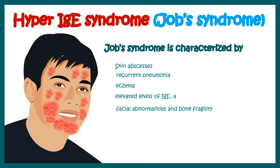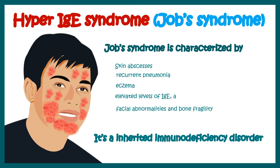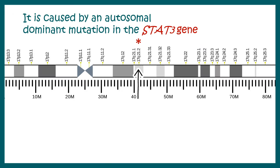The most important fact about Hyper IgE Syndrome is that it is an inherited immunodeficiency disorder. Since it is inherited, there must be a defect or mutation in a gene. In the case of Job Syndrome, the gene is located on the 17th chromosome — specifically at locus 17q21.2 — which corresponds to the STAT3 gene.